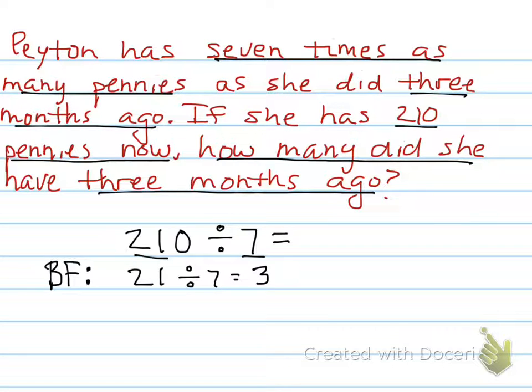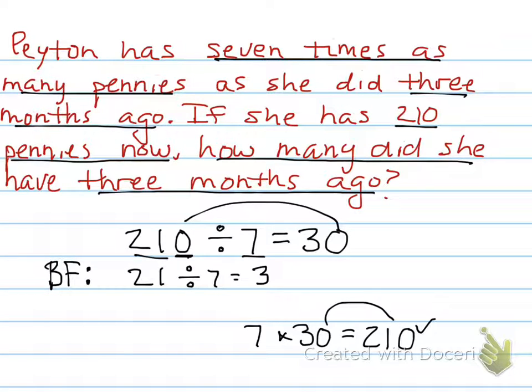Now, see how many zeros? There's one zero. So, really, my answer would be 30. Well, look at that. To check, divisor times quotient. Let's see if it gives us our dividend. Seven times three is 21. Bring that zero over, just like we did up here. Yep, I got my dividend. We're right.